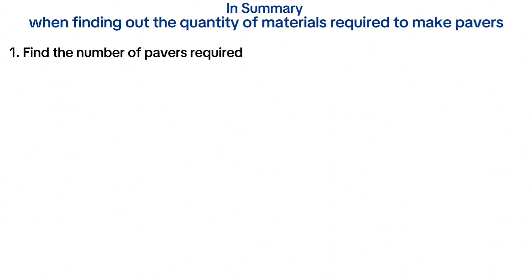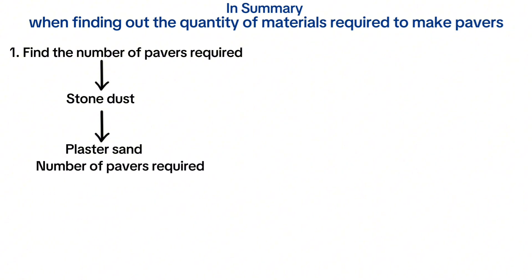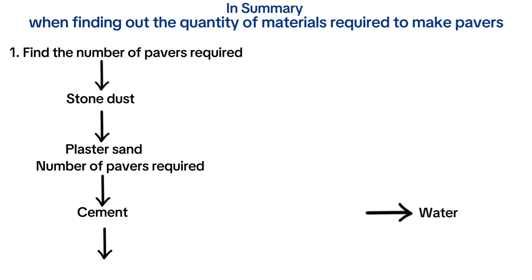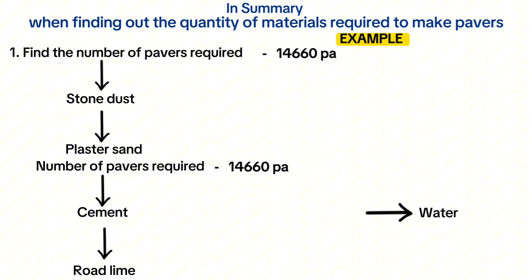In summary, when finding out the quantity of materials required to make pavers: first find out the number of pavers needed. The pavers will lead us to the quantity of stone dust. Stone dust will help us get the quantity of plaster sand. Pavers will also help us get the quantity of cement, and cement will help us know the quantity of water and road lime required.